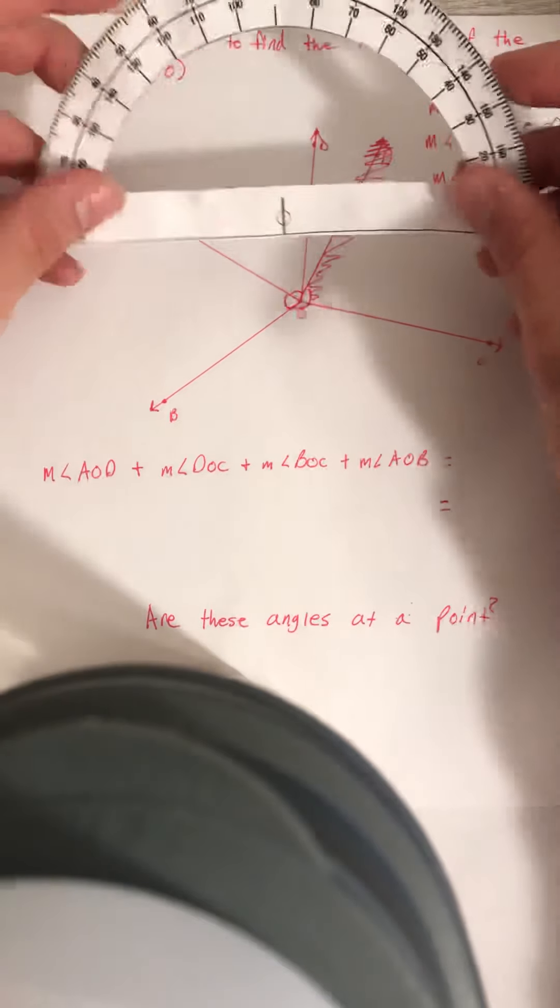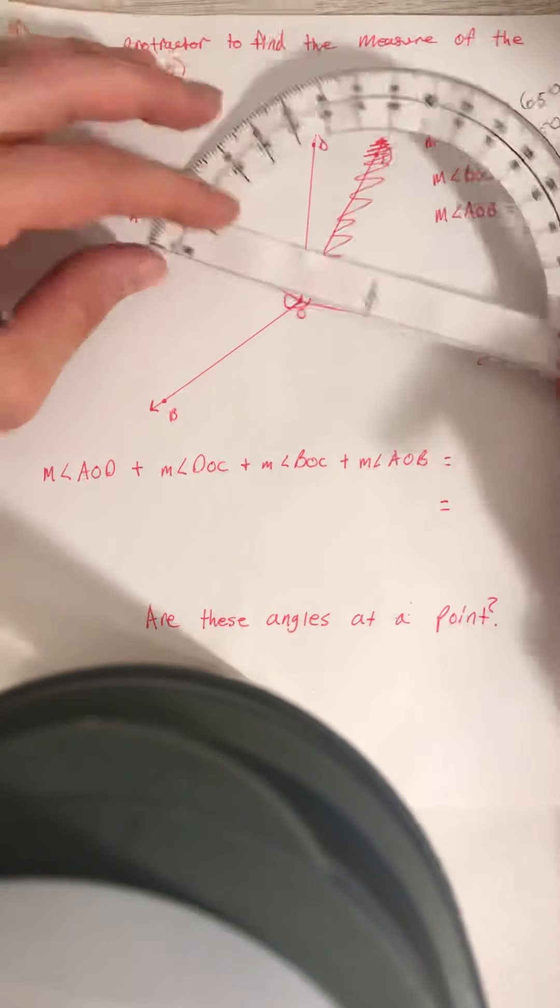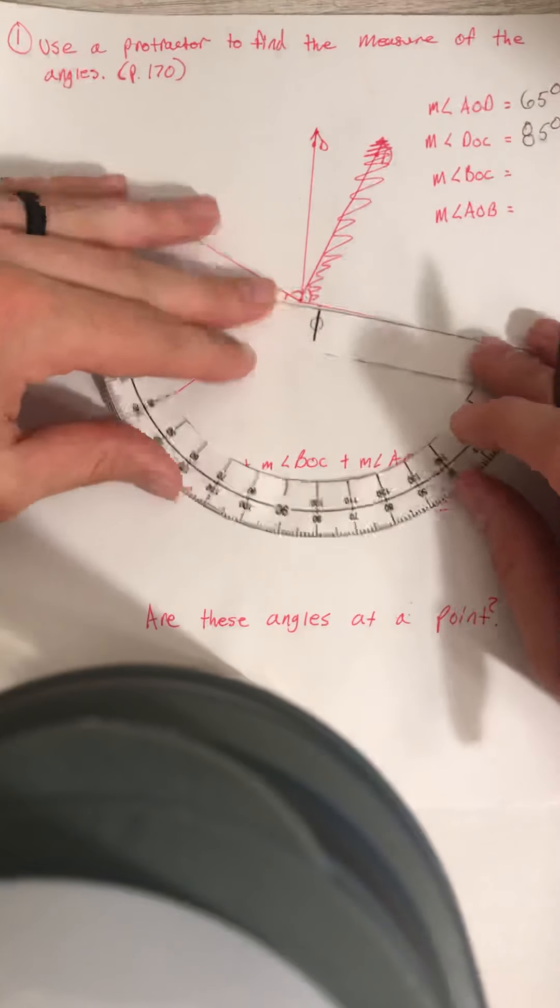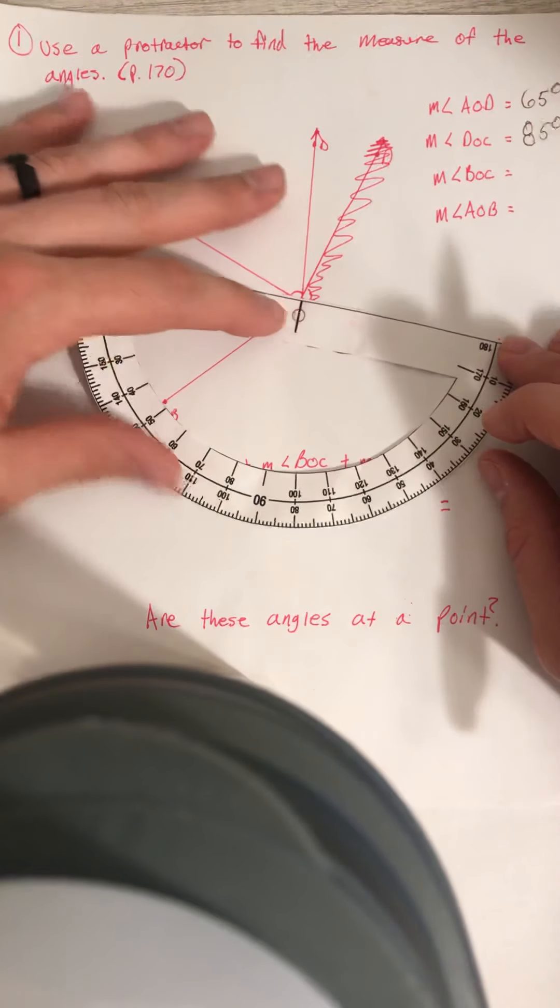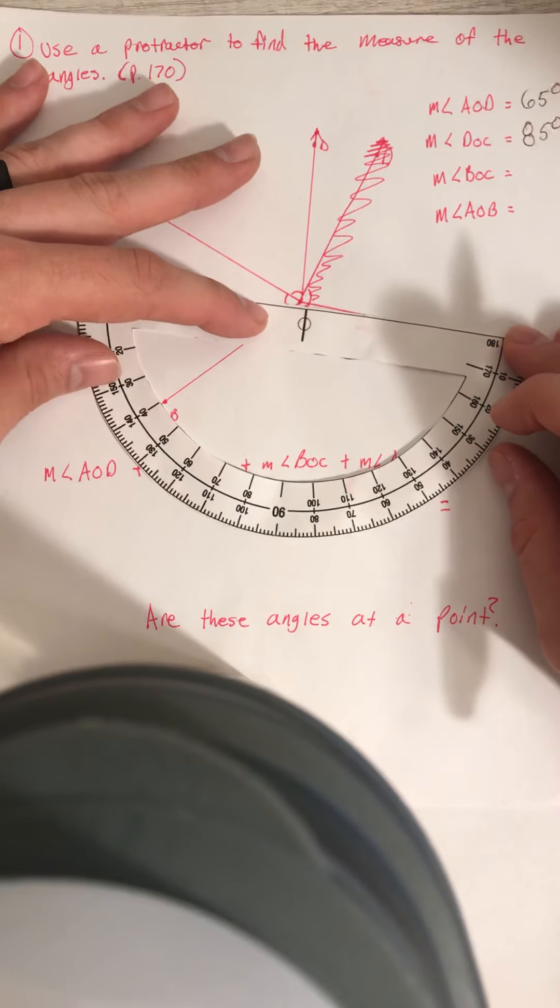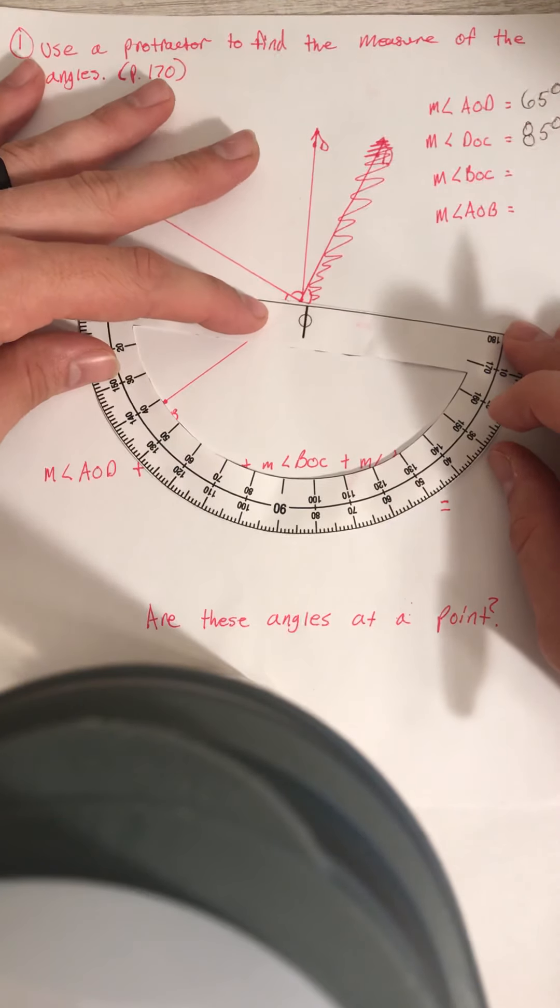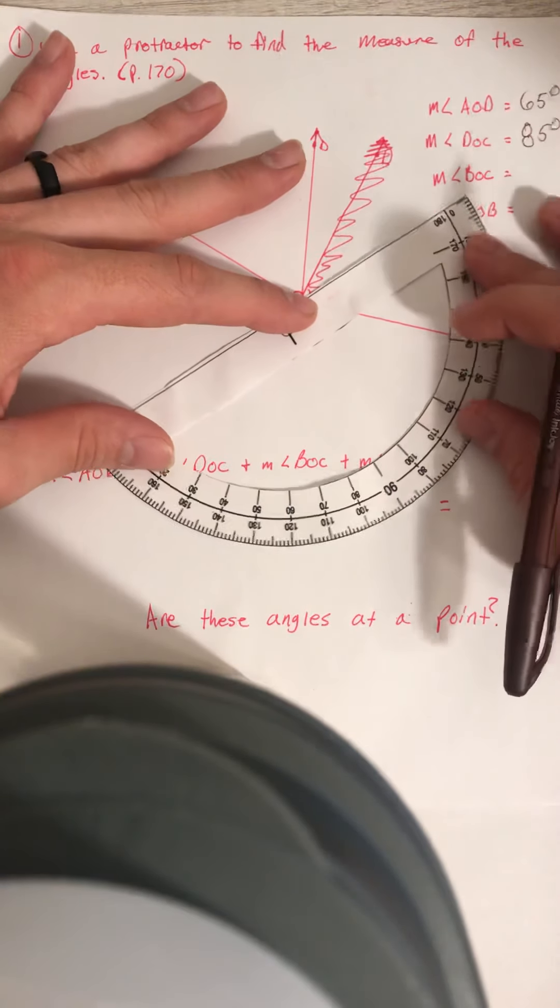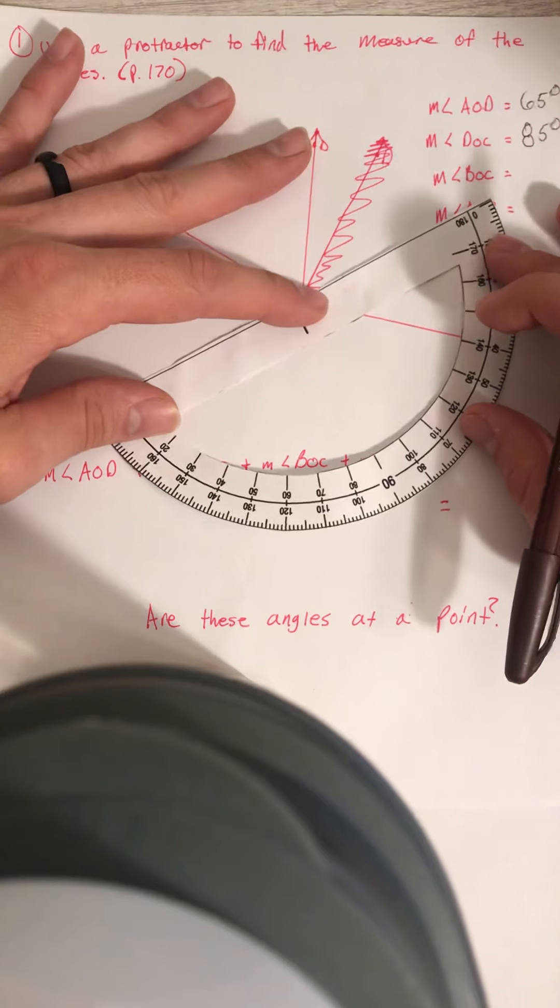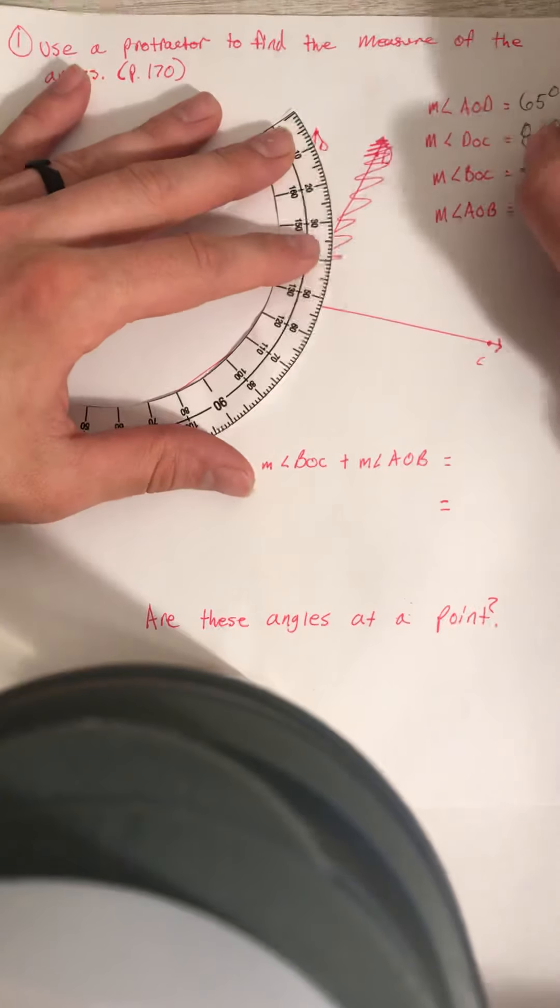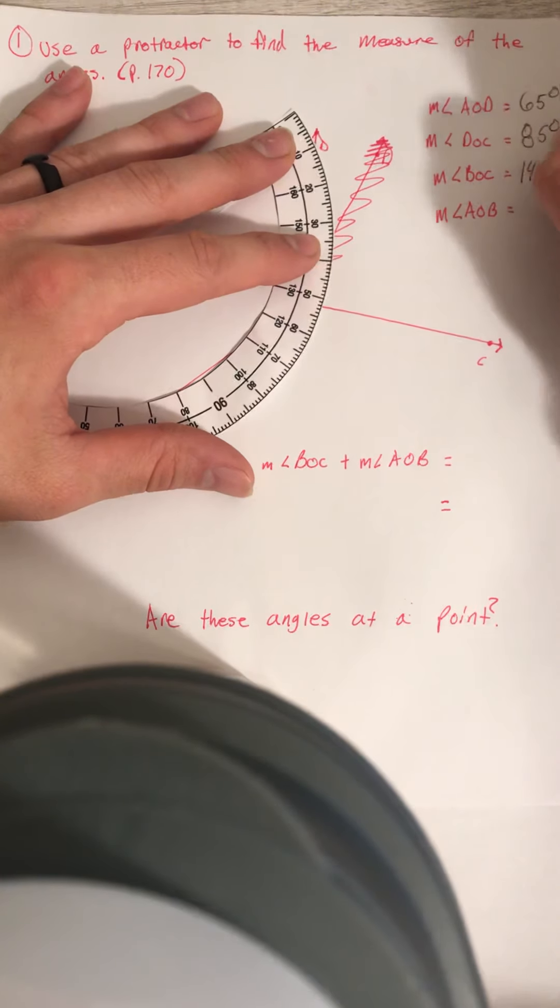I'm going to do the same for BOC. And I'm only going to do this one way this time. Flip it upside down. For angle BOC, it is going to be at 140. And maybe we'll just check it this way. I said I was only going to do one way, but I changed my mind. I'm going to make sure we're on point here. Good on both sides. 140. So my measure of angle BOC is 140 degrees.